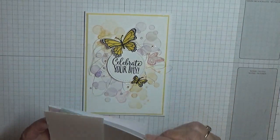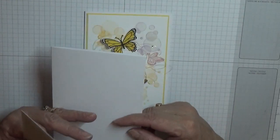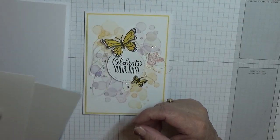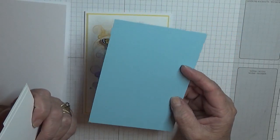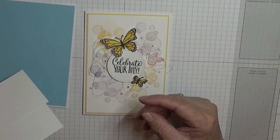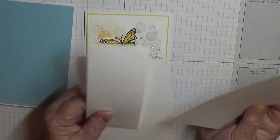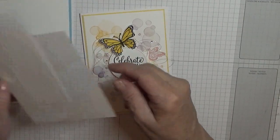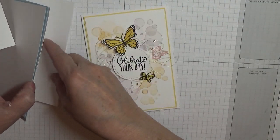For that you need a card base of eight and a quarter by five and seven eighths scored and folded in half, a piece of balmy blue card at five and five eighths by three and seven eighths, a piece of white cardstock at five and a half by three and three quarters, a piece of white at five and five eighths by three and seven eighths for the inside.